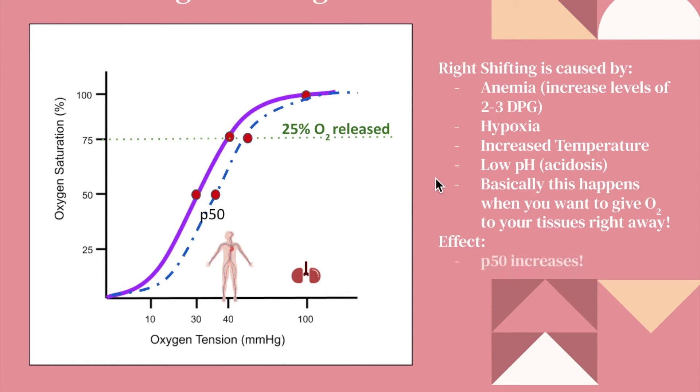And so the effect of this is P50 increases. Remember, P50 is the oxygen tension when hemoglobin is 50% saturated. So here, P50 was only at around 26 to 30. And on a right shift, it is now at like 35, 36. The point is it increased. So it's actually an effect of right shifting.